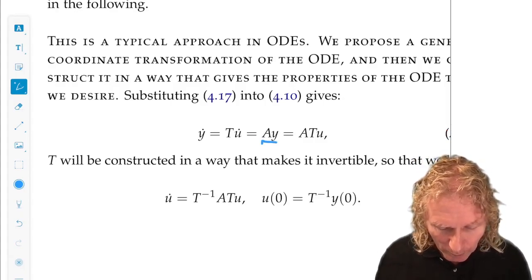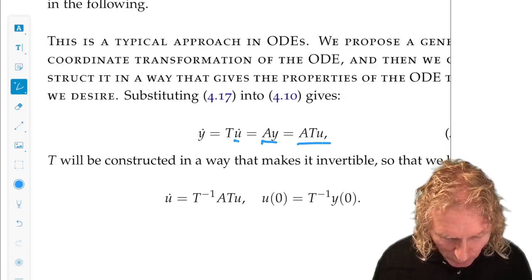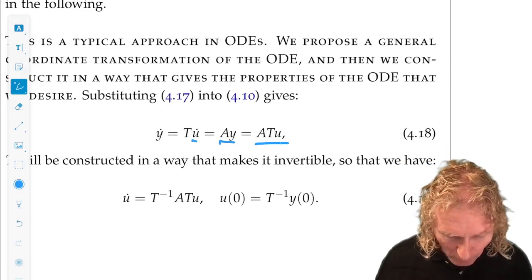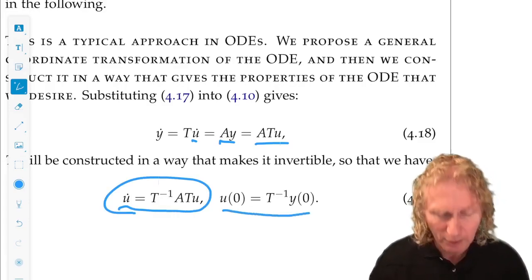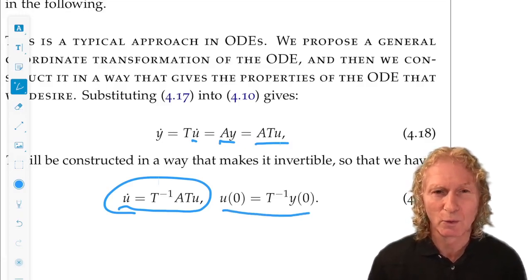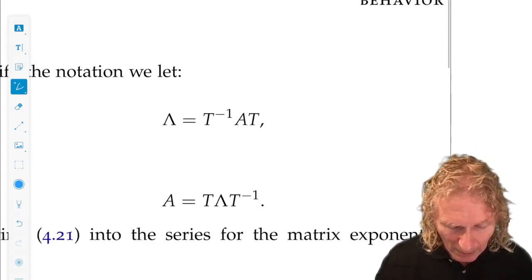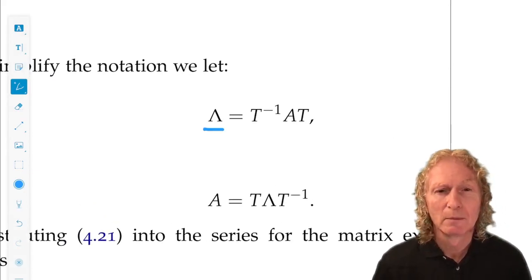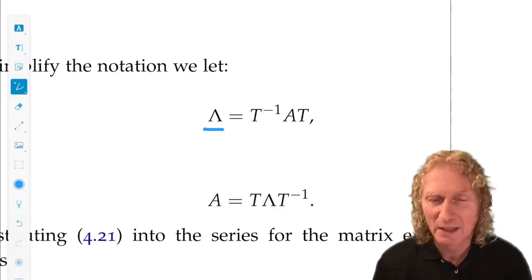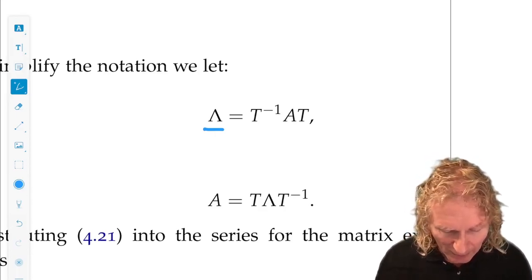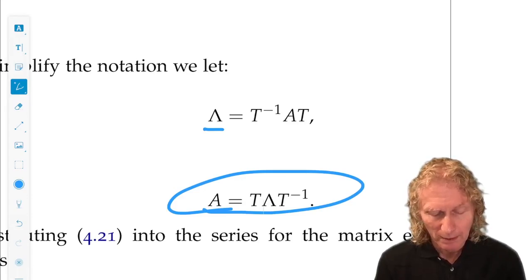Okay, but y dot is Ay, but y is Tu. Now let's isolate u dot. And we can see from the expression 418 that u dot is T inverse At, and we can write the initial condition in terms of initial condition for u in this way. Okay. Let's define uppercase lambda to be T inverse AT. And then in that case, A happens to be T lambda T inverse.